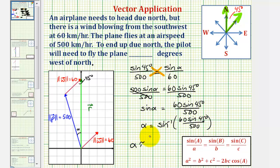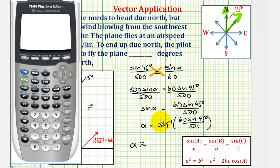And now we'll go to the calculator to approximate alpha. We first want to verify that we are in degree mode, so we'll press the mode key. Notice how degree is highlighted, go back to the home screen, press second sine for inverse sine or arc sine, and then we have 60 sine 45 degrees divided by 500, close parenthesis, enter. So alpha is approximately 4.8676 degrees.